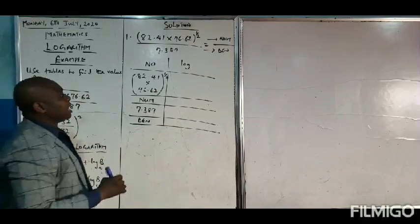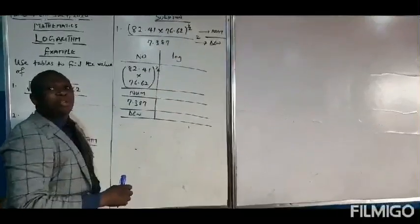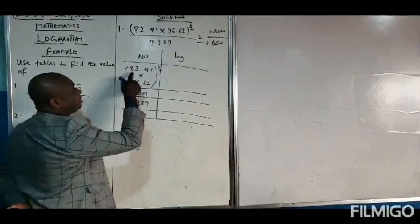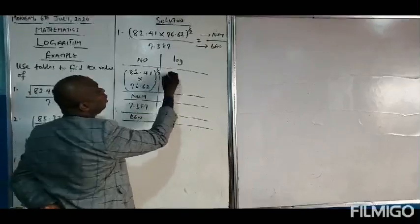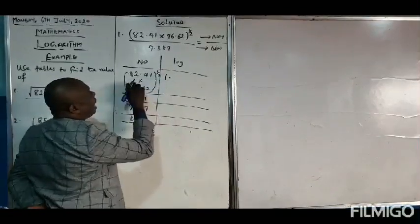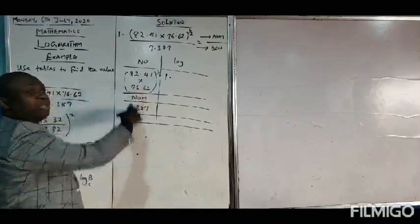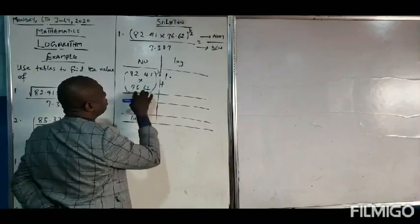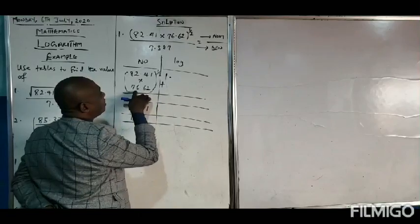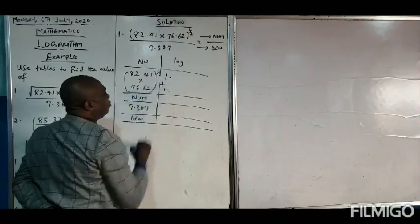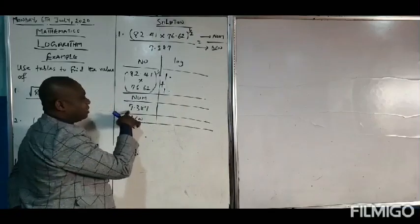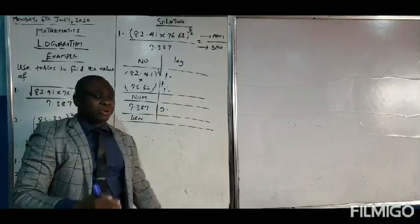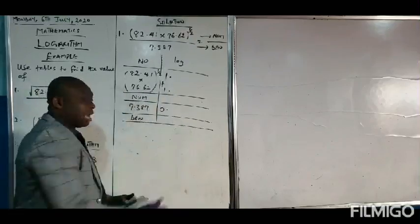The first thing to do before you begin to obtain the log of any number is to obtain your characteristics first. The characteristics of 82.41 would be one point. Anytime you have multiplication, according to the law it becomes addition, so this would be plus. The characteristics of 76.62 is also one point, and the characteristics of the denominator number would be zero point.